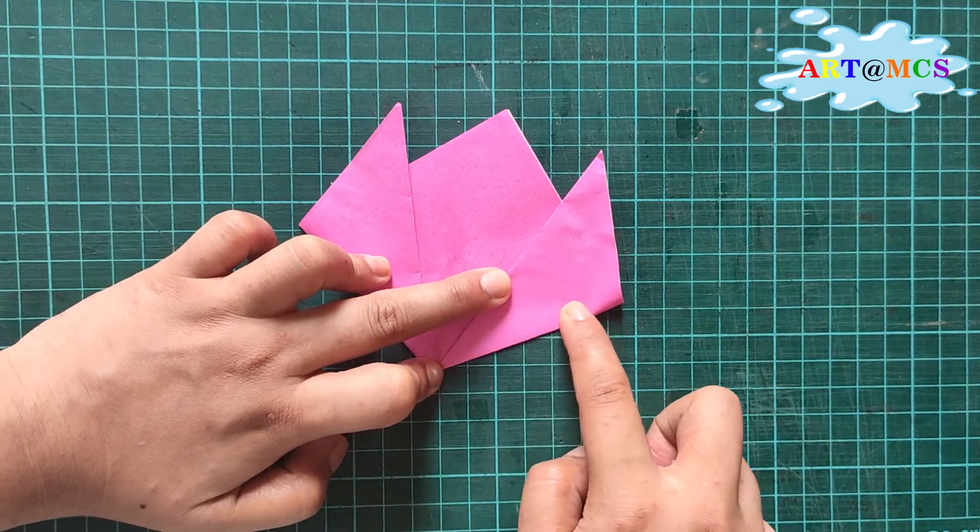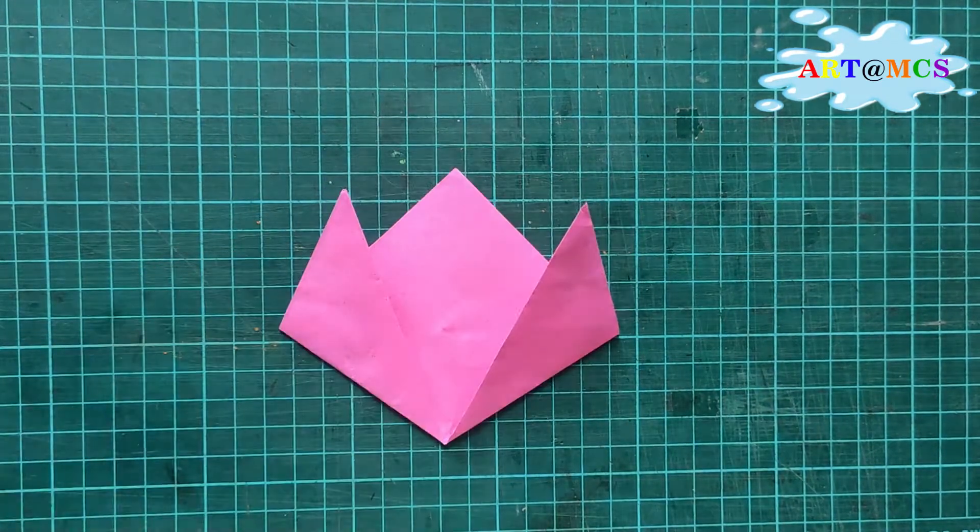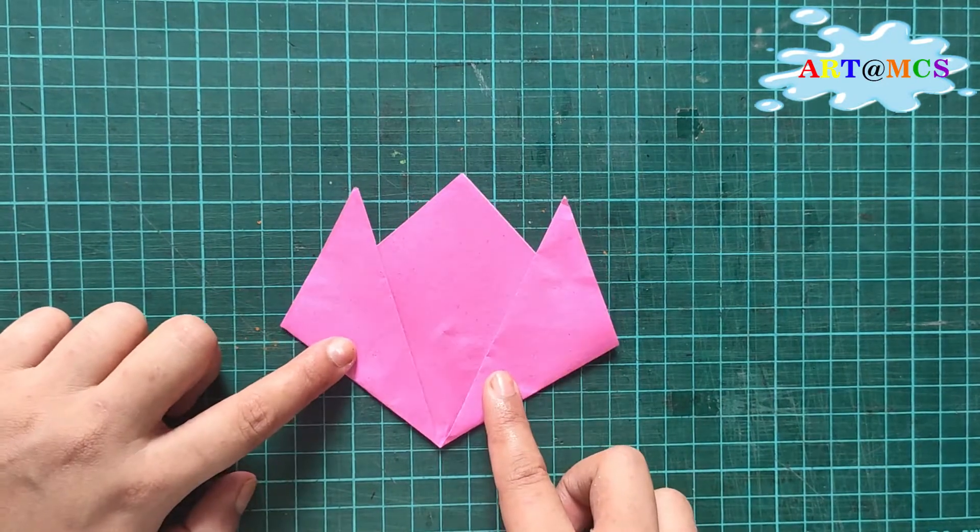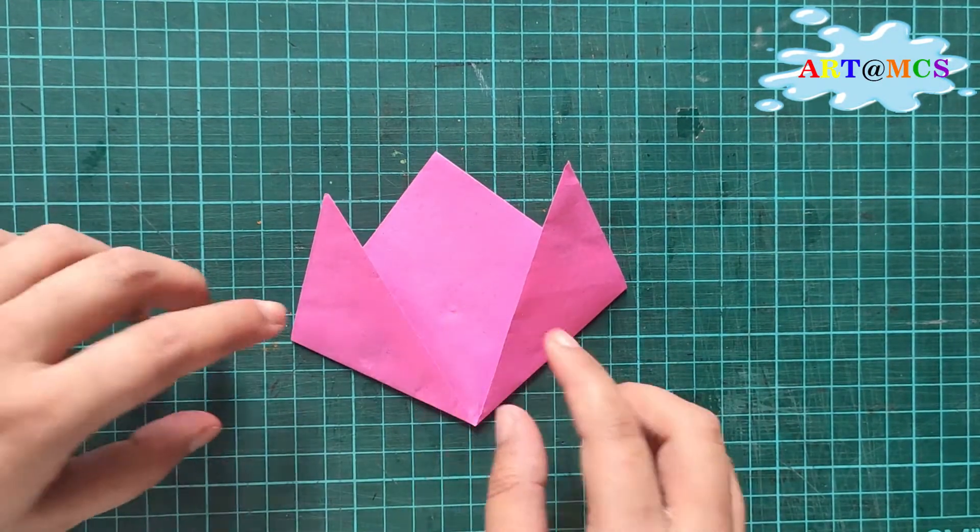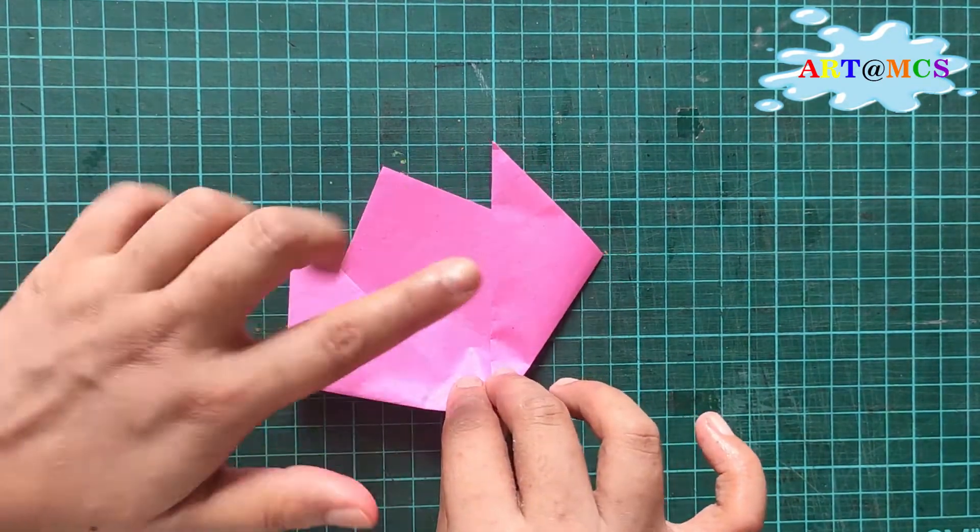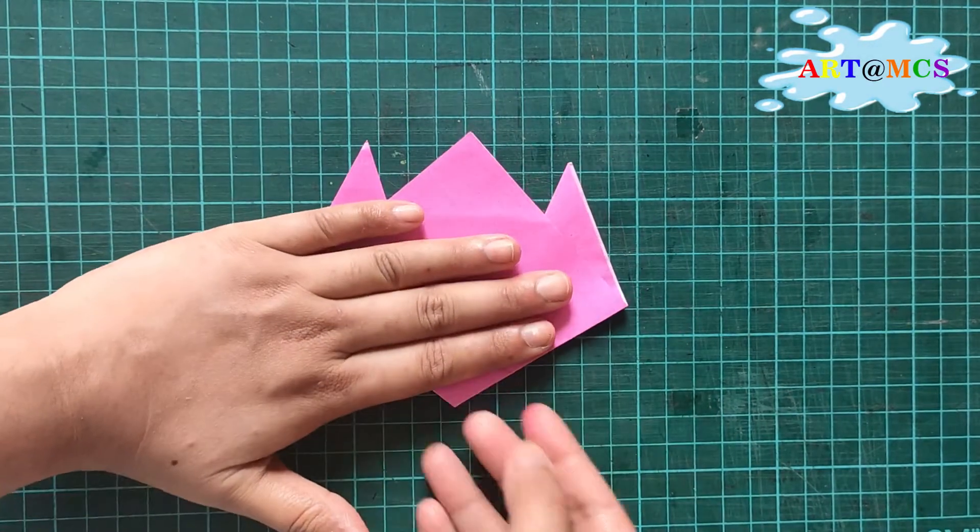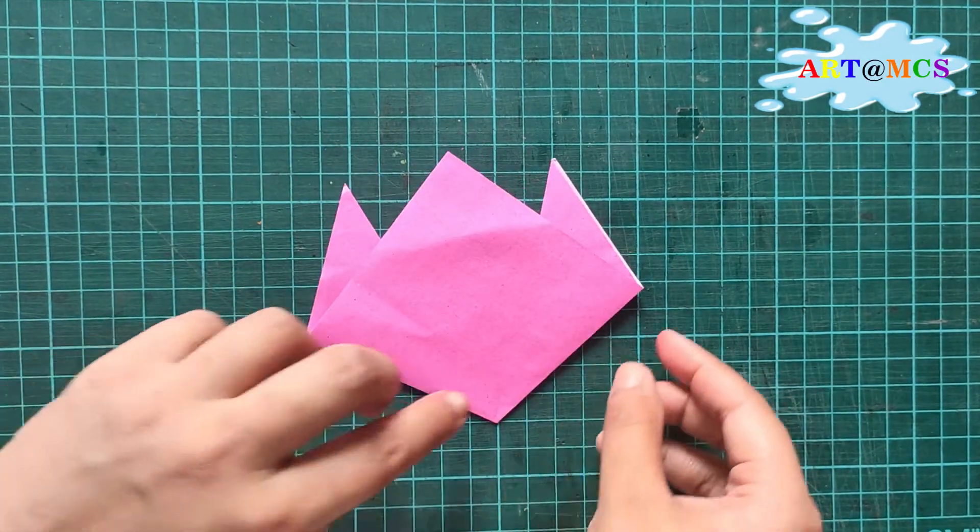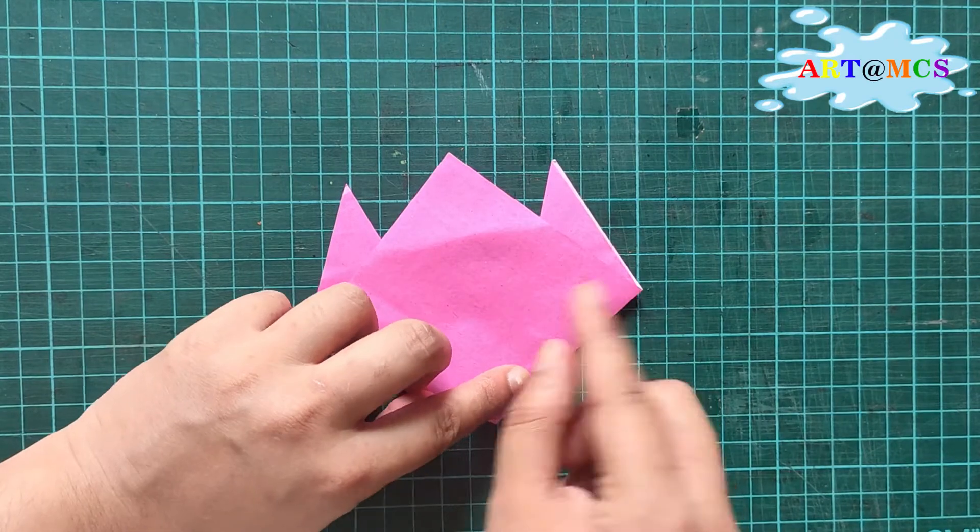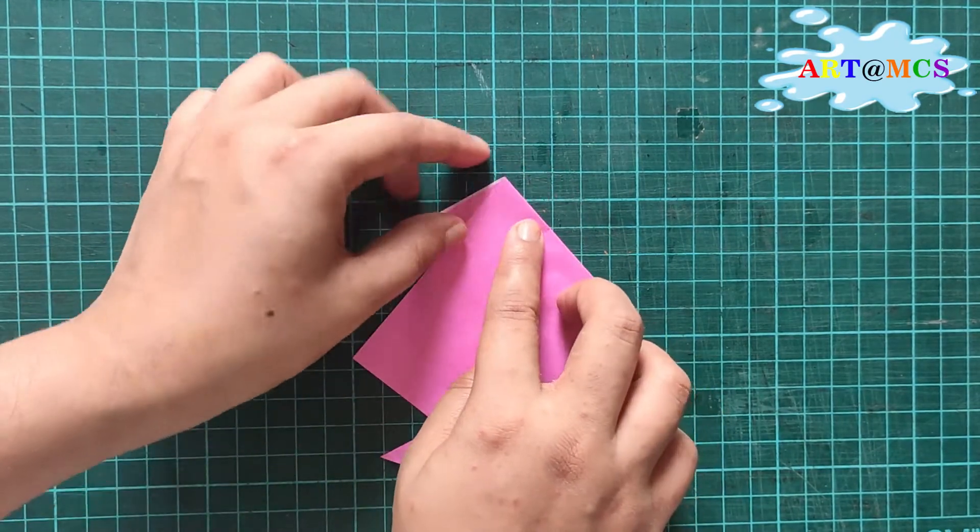What you will have is a shape like this. Now flip this upside down—put this part at the back. Now you need to fold the corners inside. Take one corner, fold a little bit in, and press it nicely with your fingers.